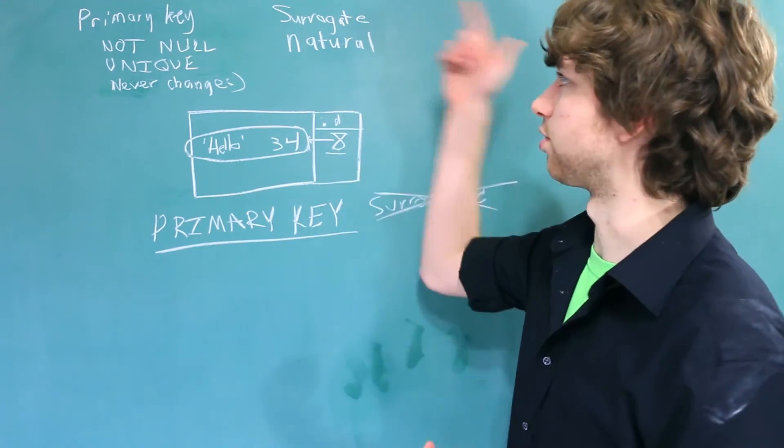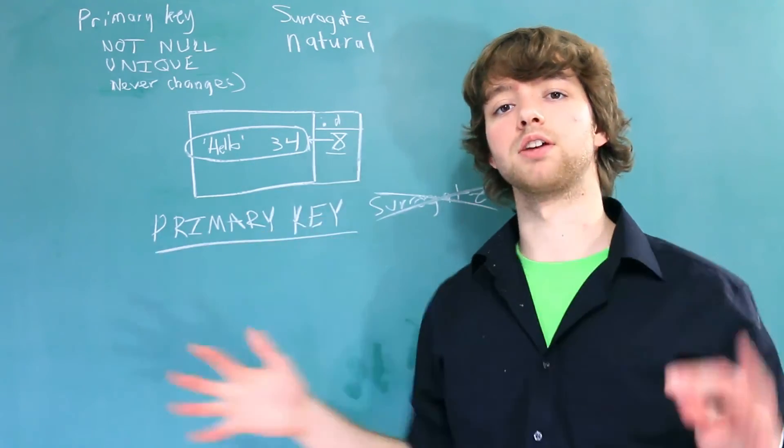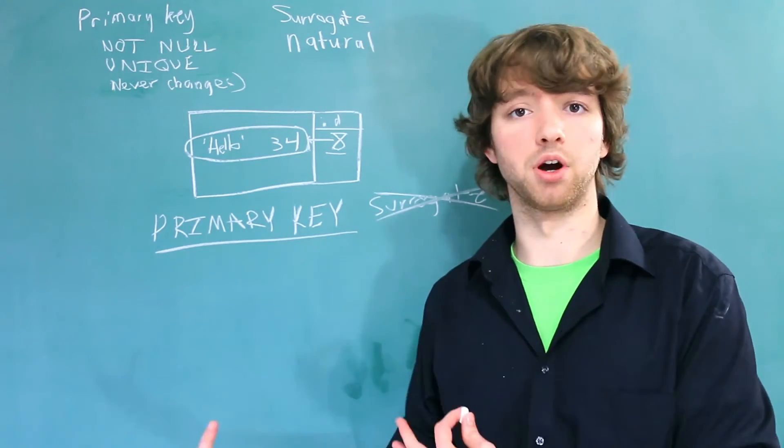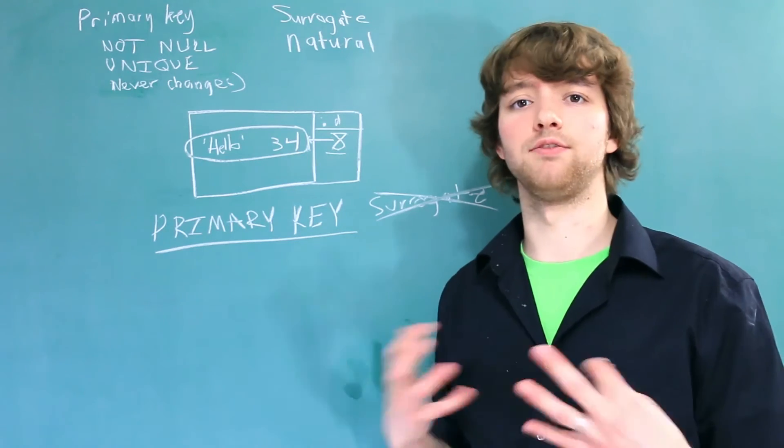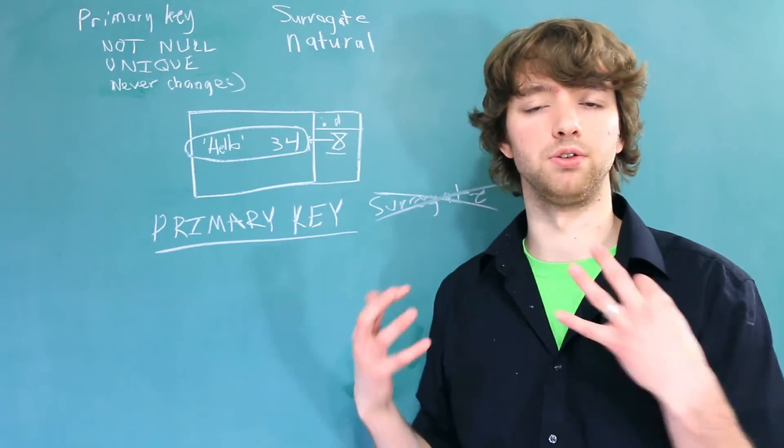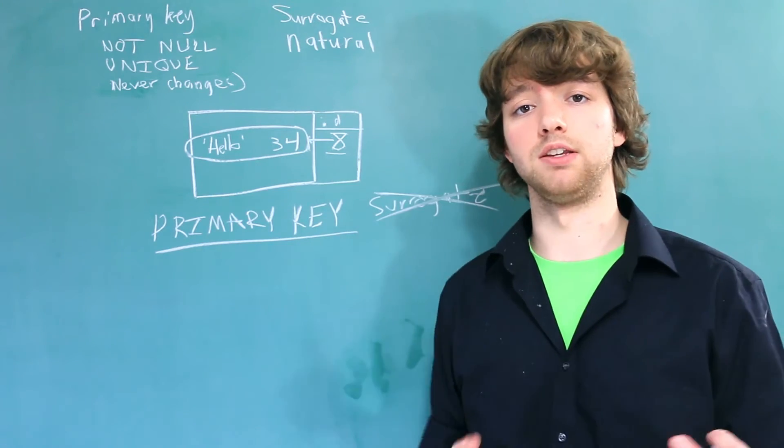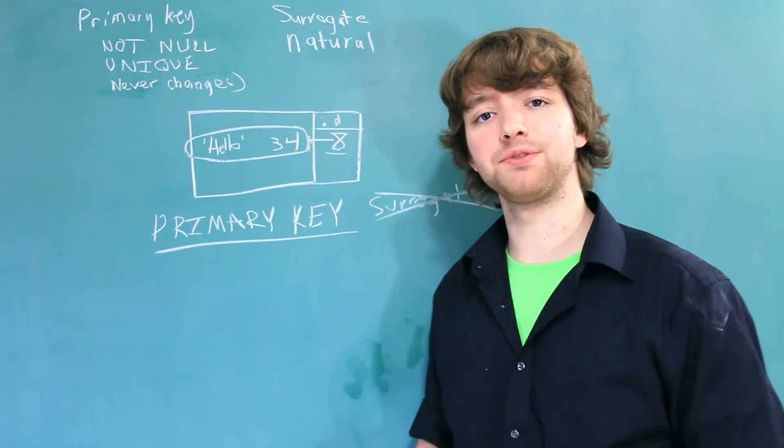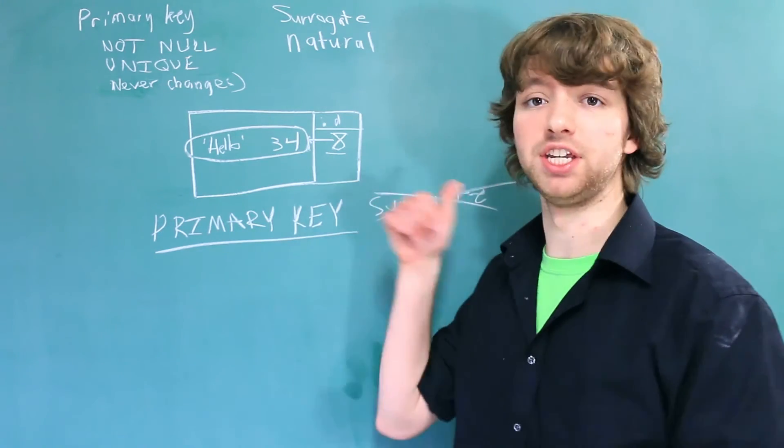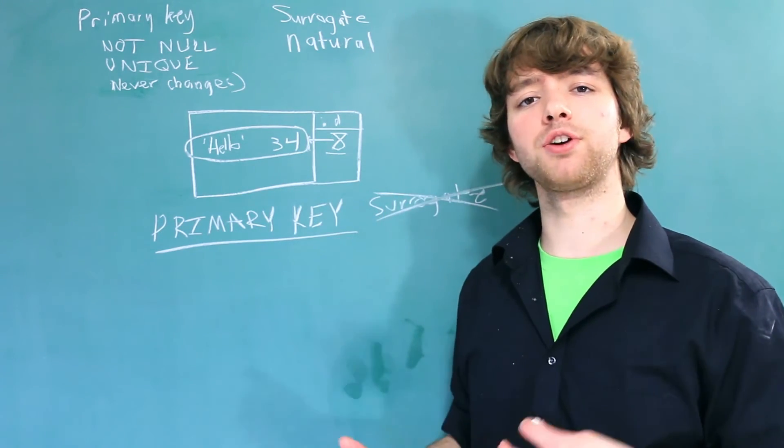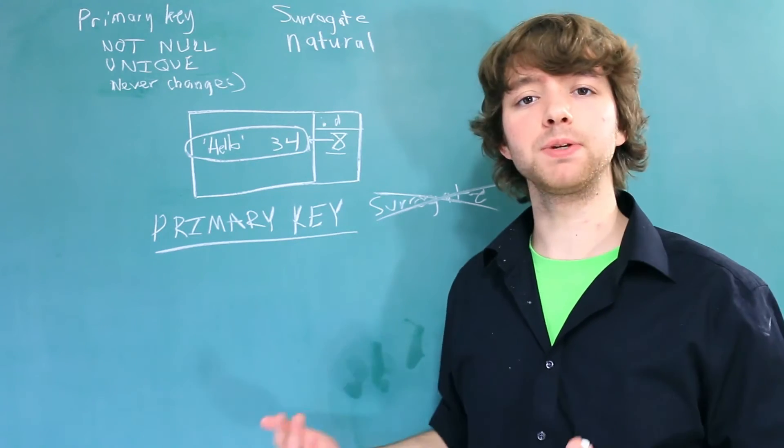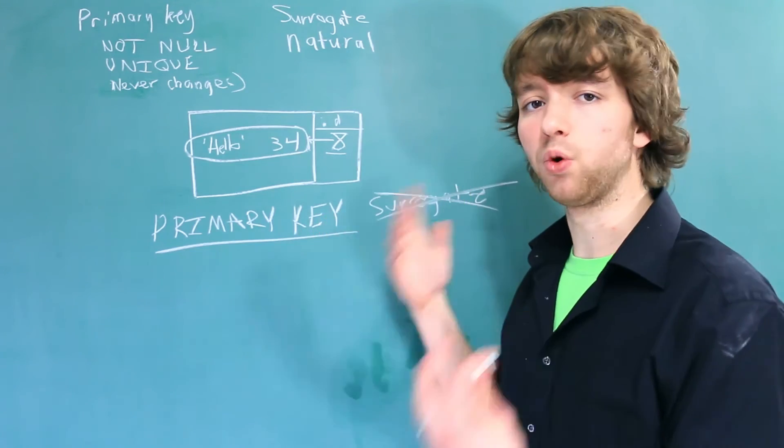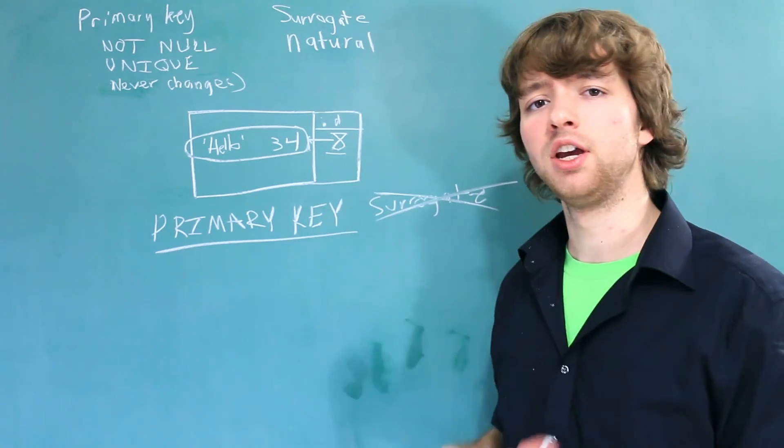Oftentimes you'll want to use either surrogate or natural keys throughout the entire database rather than switching to surrogate for part of it and switching to natural for part of it, because then it's kind of confusing. If you're just starting out with database design and you're not required to use natural keys for some reason, I recommend starting out with surrogate keys. That's because it's super easy to make the database create your IDs for you. You don't have to worry about the data changing or anything like that.